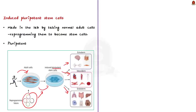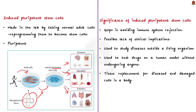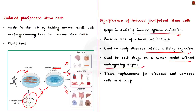What are the significance of induced pluripotent stem cells? IPS cells can be created from the tissue of the same patient who is going to receive tissue or organ transplantation, helping avoid immune system rejection. They also help avoid ethical implications because cells are harvested only from a willing adult without harming them. These patient-specific cells can be used to study disease outside a living organism, test drugs on a human model without endangering anyone, and hopefully act as tissue replacement for diseased and damaged cells.